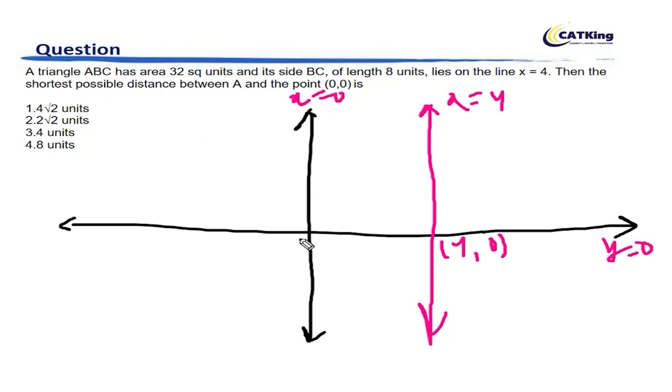Shortest possible distance between A and the point 0,0. Now the point 0,0 is this. We all know that the shortest distance is the perpendicular distance. I hope you all studied this in the basics of geometry, that the shortest possible distance is always the perpendicular distance. That's one concept I will request you should write and keep it very handy.